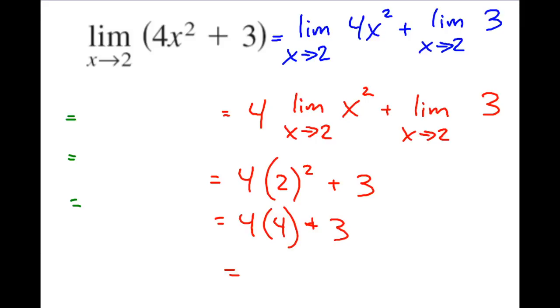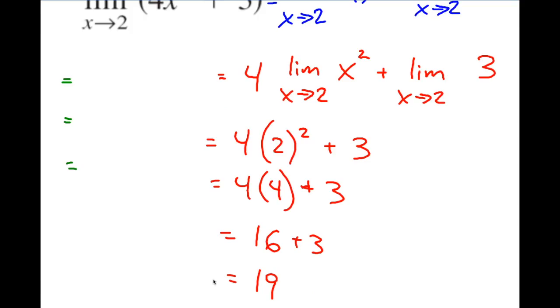So continuing to do that, you can just simplify it, 2² is 4, nice little order of operations thanks to Aunt Sally, so you can see our limit's going to be 19, hopefully you can see that.